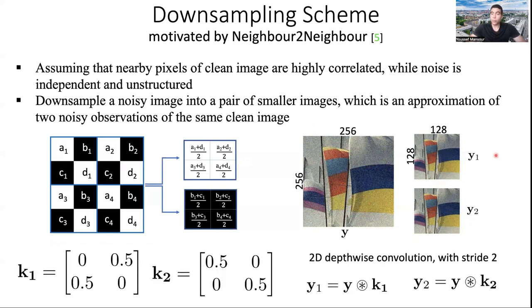So here's how we do downsampling. We divide the image into two by two patches and then we average the diagonal pixels. You can see here an example on the right for a natural image. The input is a high resolution image and the output is two images of half the spatial resolution. How do we do that? With those filters, as we can see here, we convolve the image with those filters. We do 2D depthwise convolutions with stride 2. This downsampling scheme is very fast to execute.